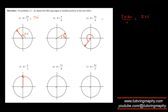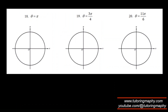π/2 is 90°, so that's straight up. 7π/6 is 210° — that's 180° plus 30°, so it's just past the negative x-axis going into quadrant 3. 5π/3 is 300°, which is between 270° and 360°, so it's in quadrant 4. And π is just 180°, on the negative x-axis.